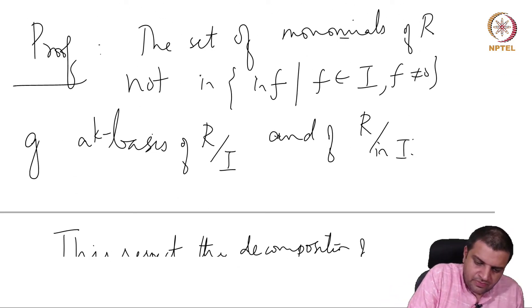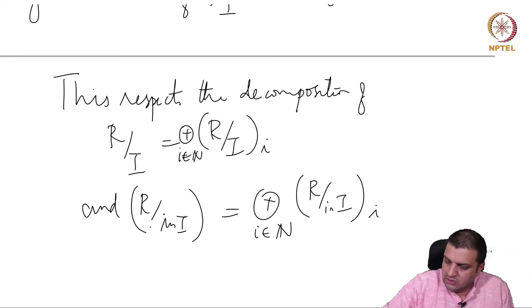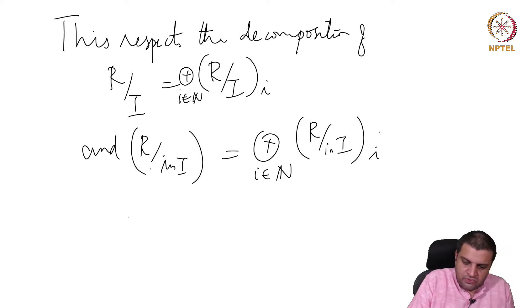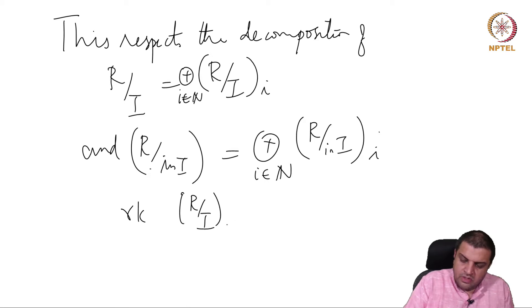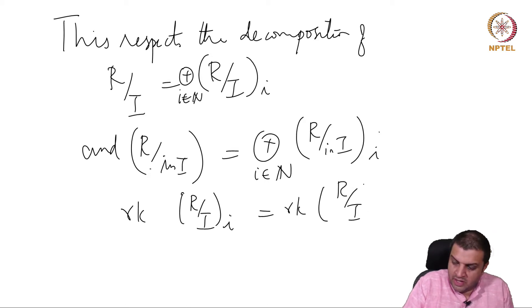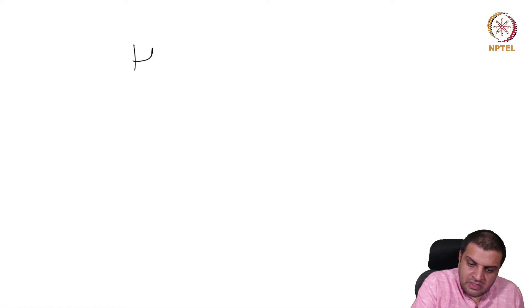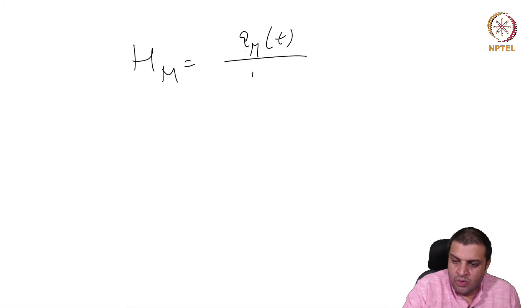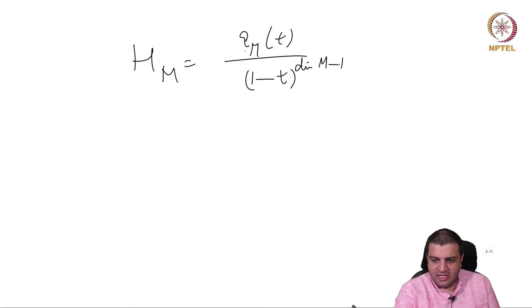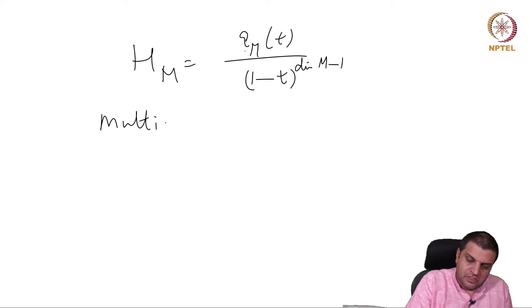One should say 'gives' because it is a residue class modulo I. Therefore, in each degree the dimensions are the same. So R mod I in degree i and R mod in(I) in degree i — multiply this by t to the i and take the sum — you will get the same function on both sides. So the Hilbert series are the same.